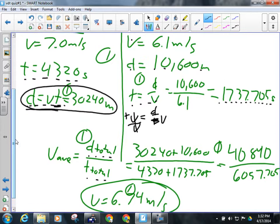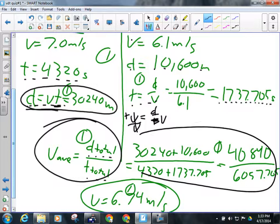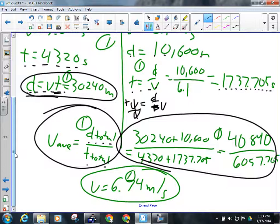Now, from there, now we can do the total distance over total time thing. We'll have the distance from part one, 30,240 meters plus 10,600 meters divided by the total time, 4,320 plus 1,737.705. So if they have this, give them a mark. And then they should get, as a final answer, 6.74 meters per second. So one mark for that. So that first one is out of seven. Questions on number one?